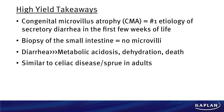Some high-yield takeaways from this problem: first, the diagnosis — congenital microvillus atrophy (CMA) — is the number one cause of secretory diarrhea in the first few weeks of life. Second, if a newborn has this, a duodenal biopsy will show no microvilli, which leads to diarrhea. That diarrhea leads to very profound metabolic acidosis because you're losing tons of bicarbonate, plus dehydration from fluid loss, and eventual death. This is a very severe condition.